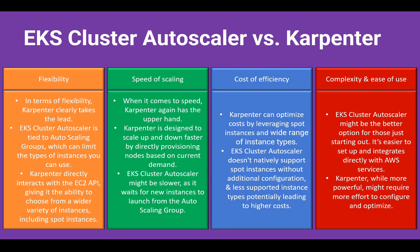On complexity and ease of use, EKS Autoscaler may be the better option for those starting out because it's easier to set up and integrates directly with AWS services. Karpenter, while more powerful, requires more effort to configure and optimize. Since Karpenter is newer, it may not have complete community information to help you in different scenarios where you need support. EKS Autoscaler has been around longer, has more resources available, and offers a more straightforward setup — though once you're comfortable with autoscaler, you can progressively move to Karpenter.